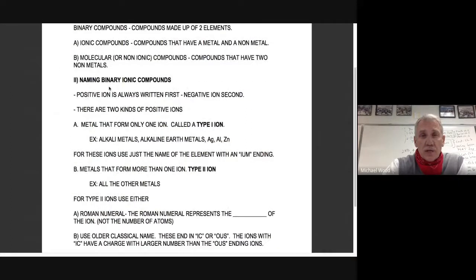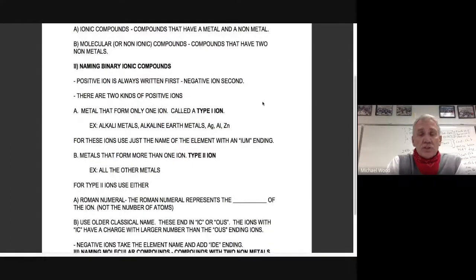Here are the rules. There's rules in a basketball game, rules in golf. Well, here are the rules. The positive ion is always written first, the negative second. It's always like that. There's two kinds of positive ions.